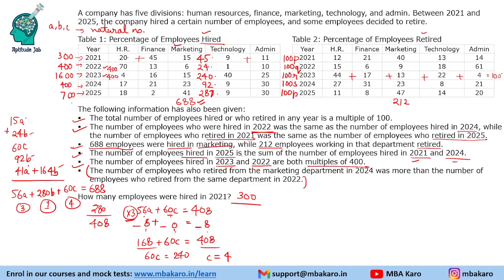The total number of people retired from marketing will be: 40P + 47P + 9Q + 13R + 23S = 87P + 9Q + 13R + 23S, and this equals 212.